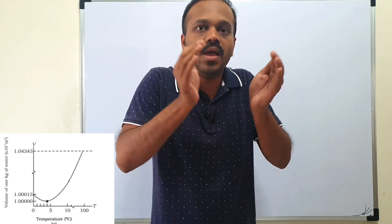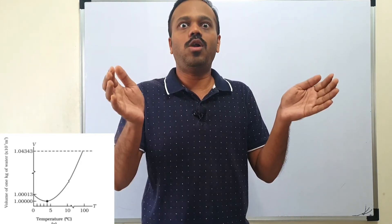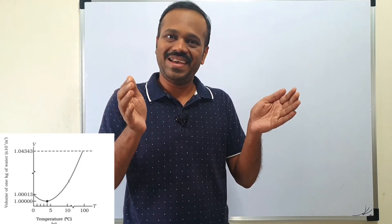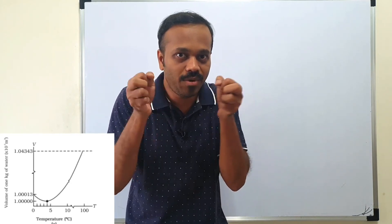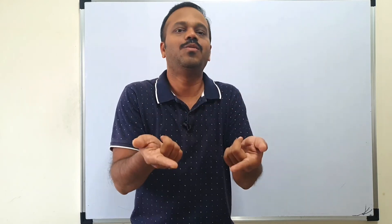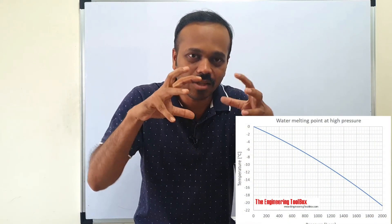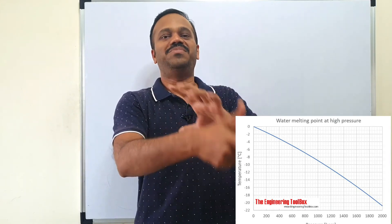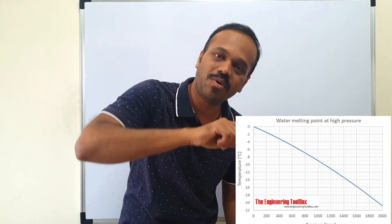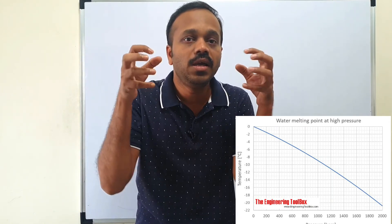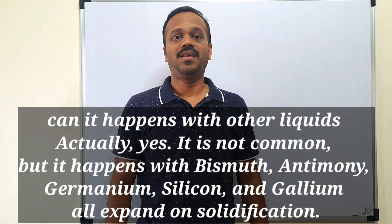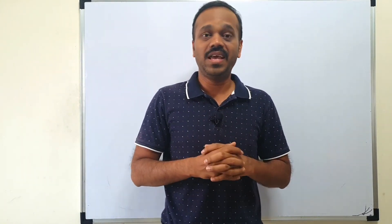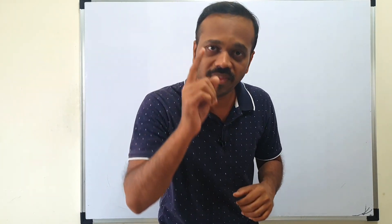If you apply pressure on ice, you try to reduce the volume. Since water can occupy less volume than ice, applying pressure converts ice to water. When you apply pressure on ice, the melting point decreases, and the ice converts to water. This is because of the anomalous behavior of water — water occupies less volume than ice. This also helps explain why aquatic animals can survive in frozen conditions.